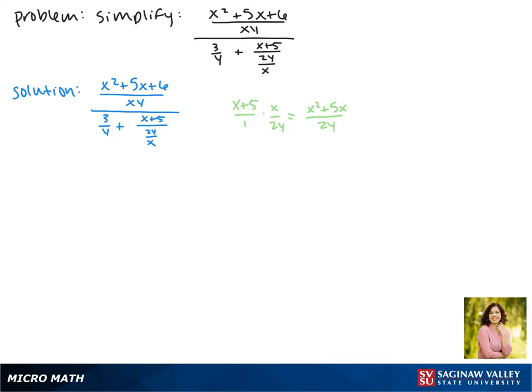So now we're going to put that back into our expression. Everything else is going to stay the same, x squared plus 5x plus 6 over xy divided by 3 over y plus x squared plus 5x over 2y.